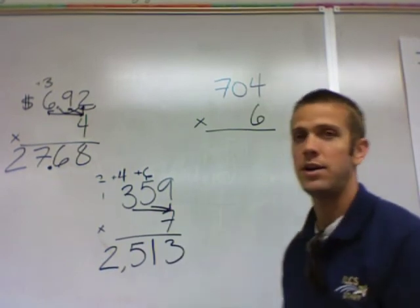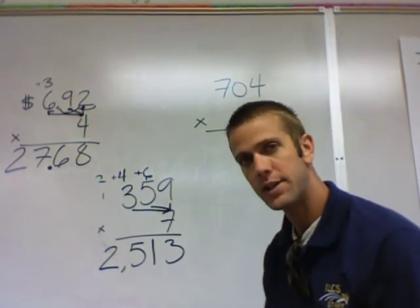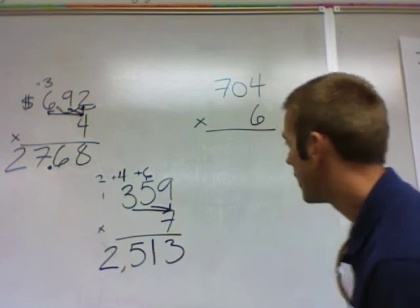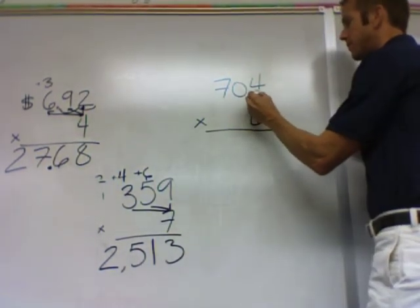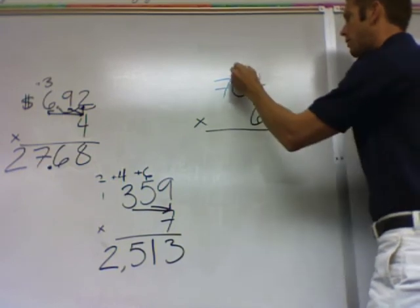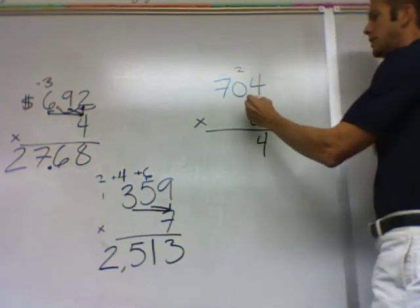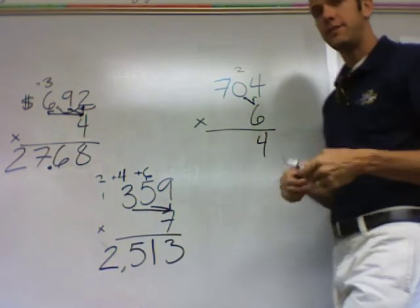One last one. I wanted to do one with 0, just to make sure you follow the same process and you don't let it trick you. One's column: 6 times 4 is 24. 6 times 0 is 0.